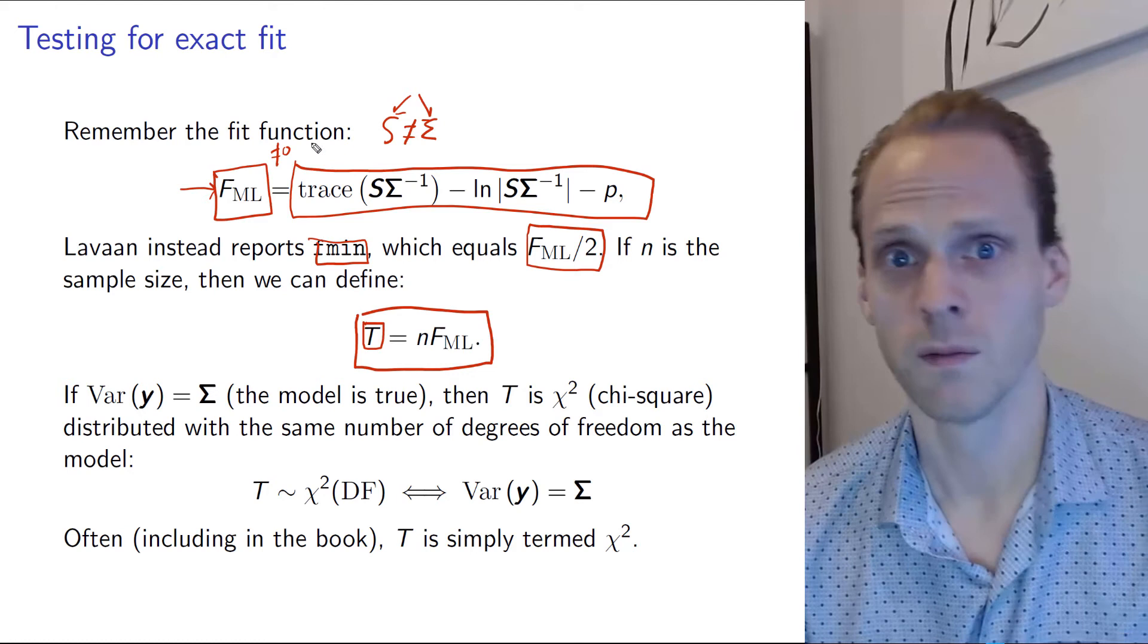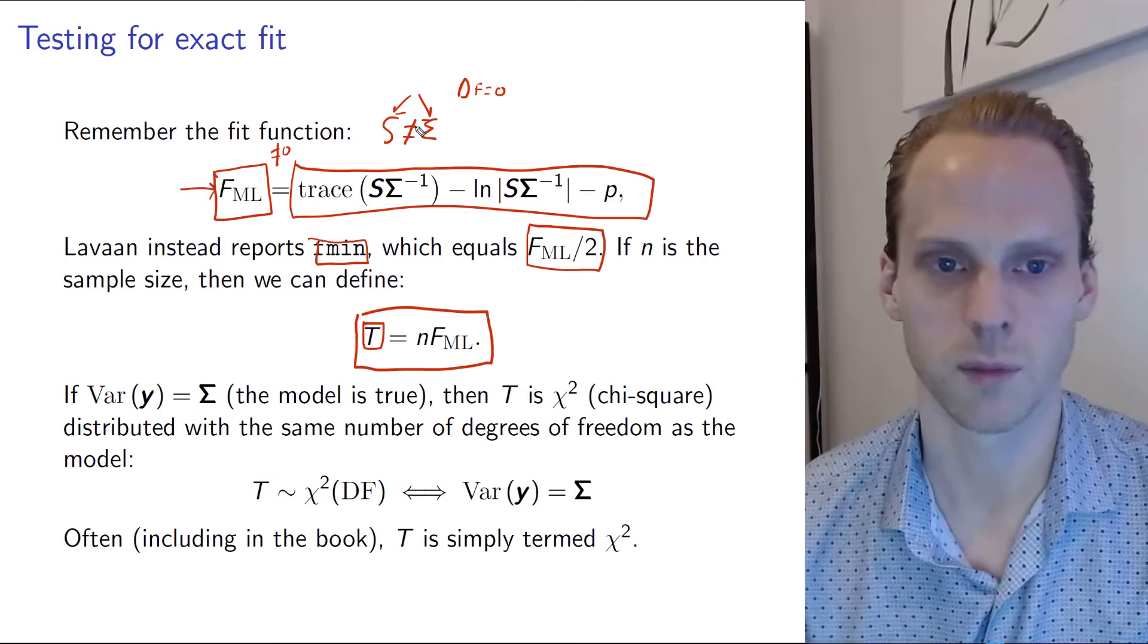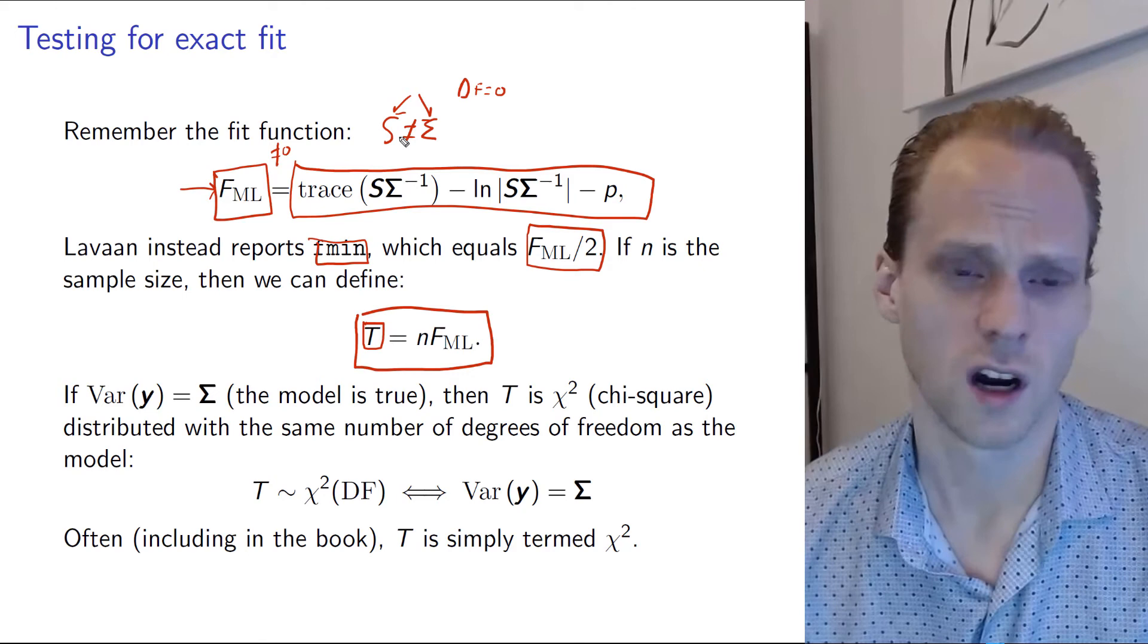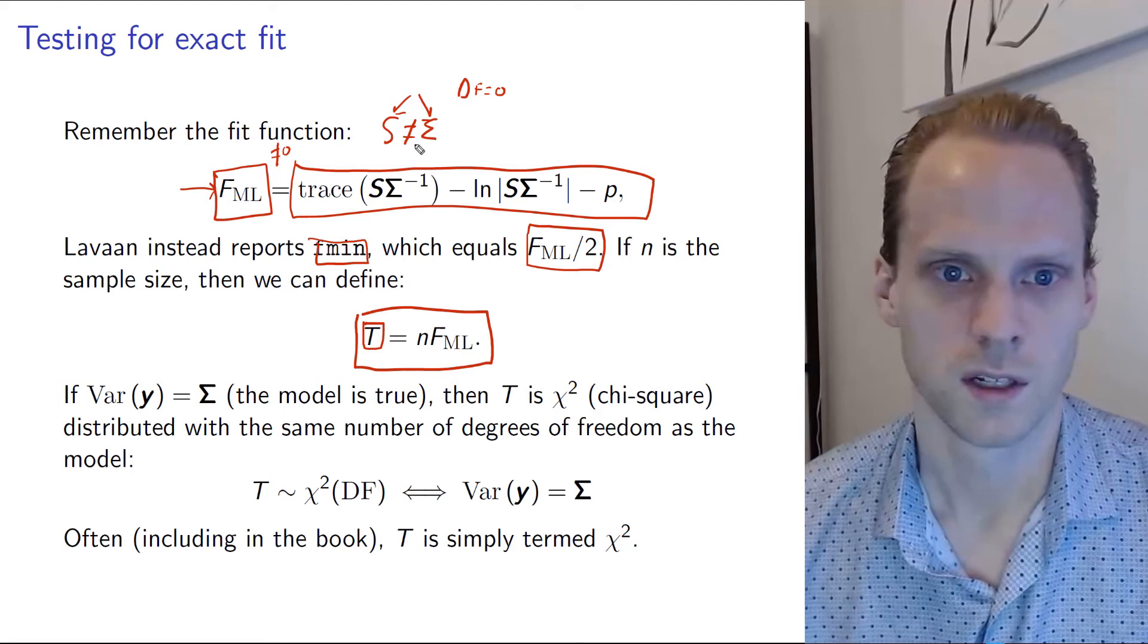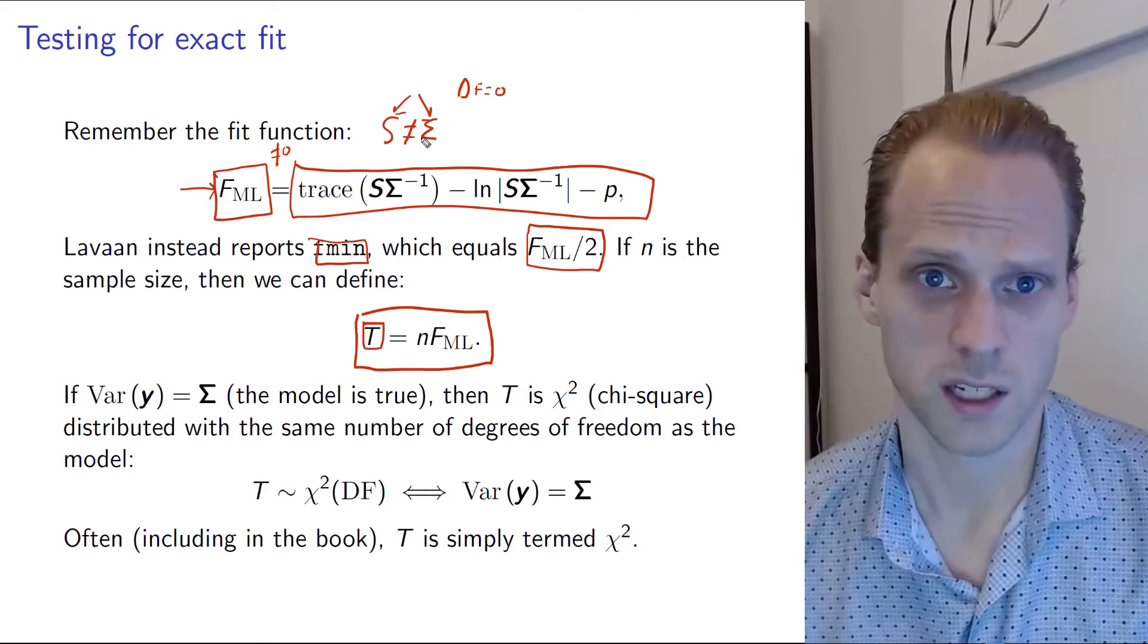Except when degrees of freedom equals zero, because then we can perfectly reproduce S. Otherwise it will be somewhere close to S if you have good fit, and not close to S if you have bad fit. So let's say if there's a correlation in S that is like 0.9 and sigma implies there's a correlation of zero, then it will be a bad fit.